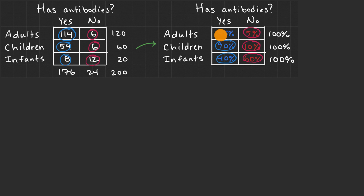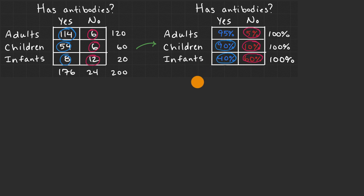Percentages help us think about what fraction of adults, children, or infants have the antibody. But if we really want to visualize it, we can look at two different types of visualizations. One we can call a segmented bar chart.